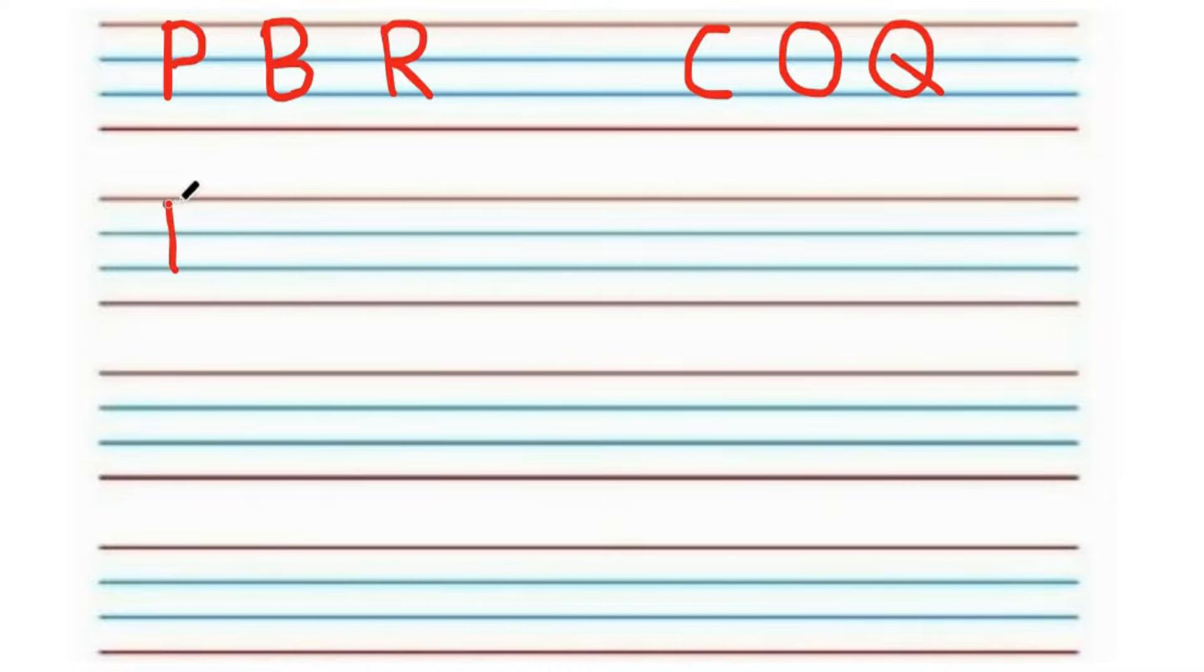Next, let's see another two similar alphabets. Alphabet E and alphabet F. Alphabet F has two lines and alphabet E has three lines. Well, that's easy to remember, right?